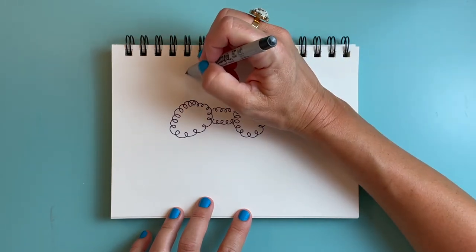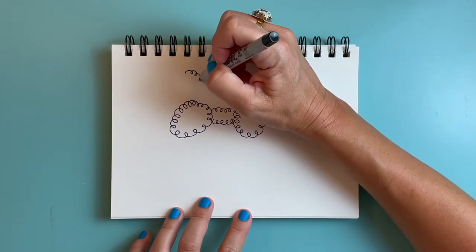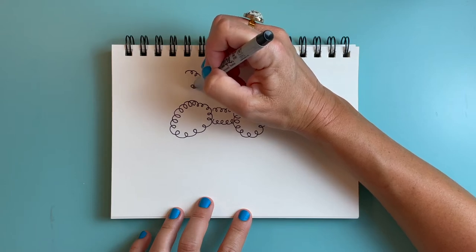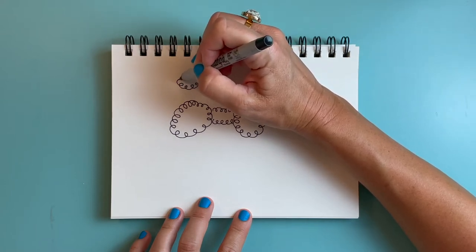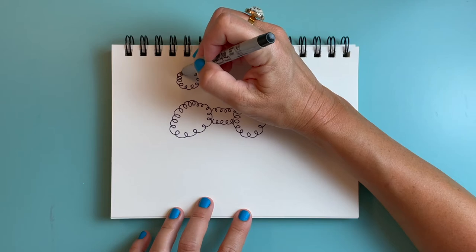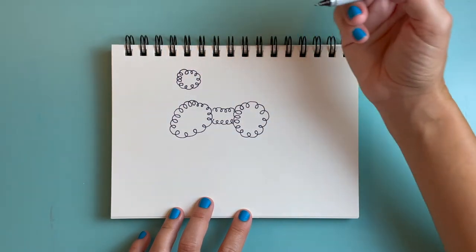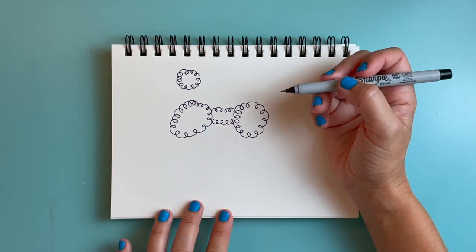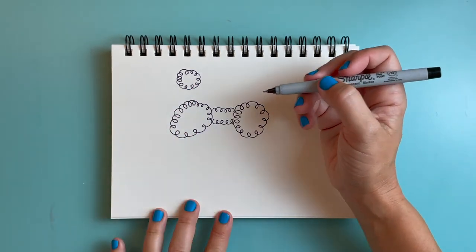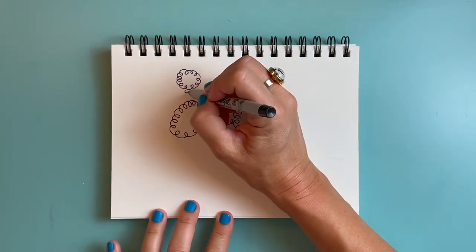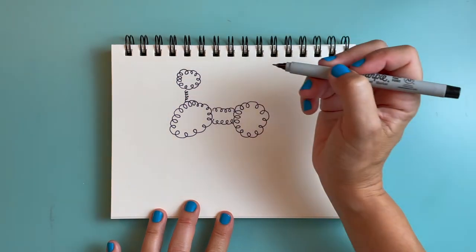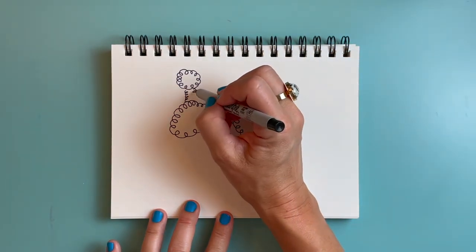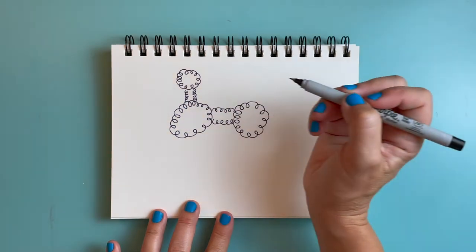So a smaller little circle here again using that curly line and I need to draw the neck part that's connecting the head with the body. So I'm going to draw a little curly line coming down this way and another little curly line right next to it.